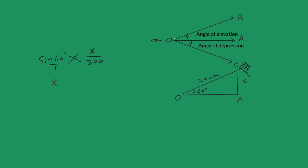X would be 200 sine 60 degrees. So, X equals 200. Sine 60 degrees is equal to under root 3 over 2. Use your calculator and multiply 200 with under root 3 over 2. You would get 173.2 meters. That is the height of the kite from the ground.